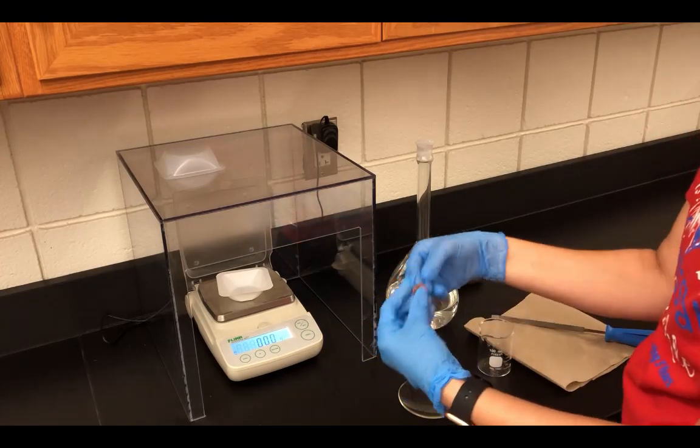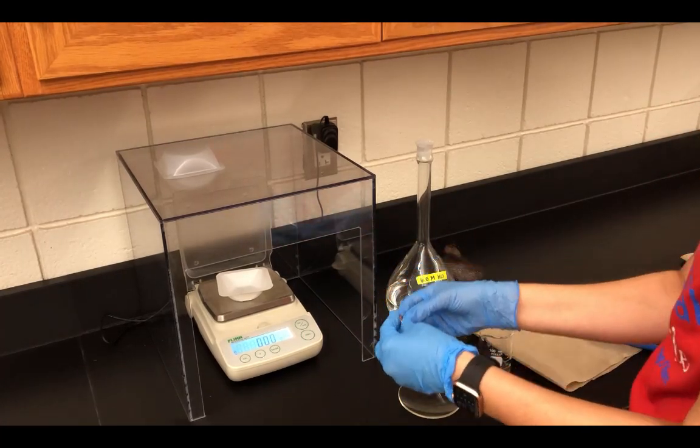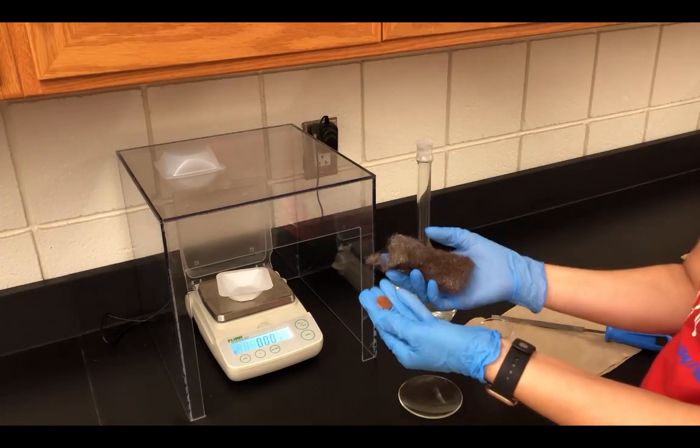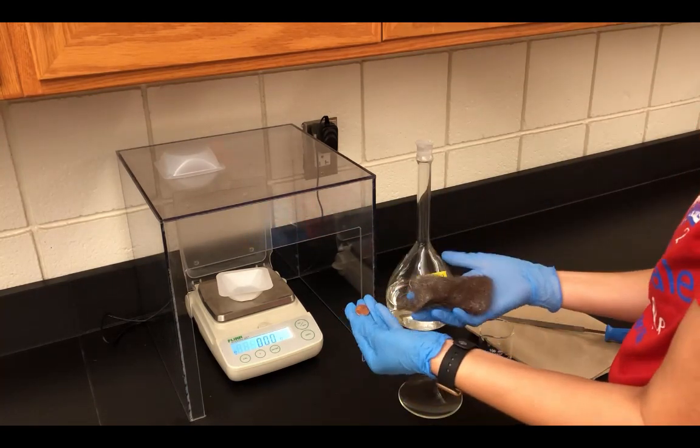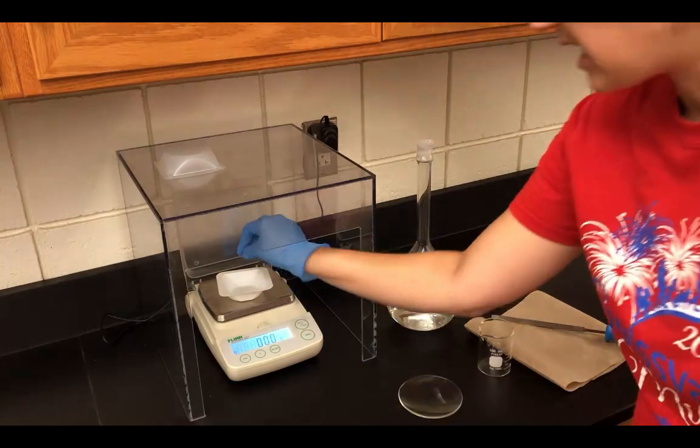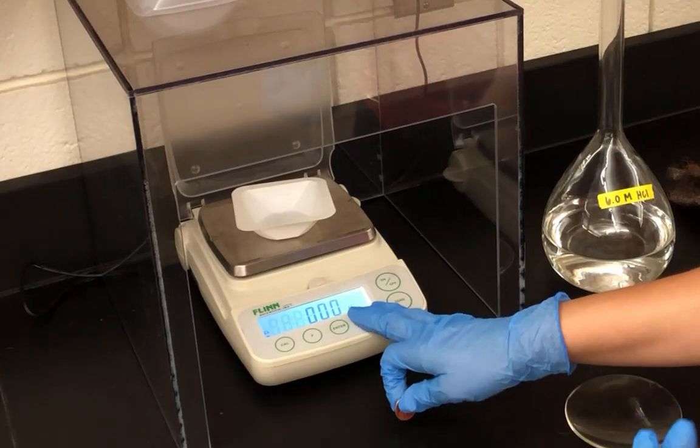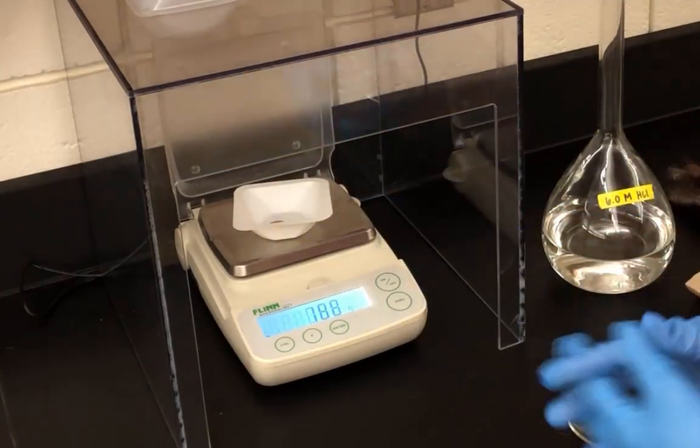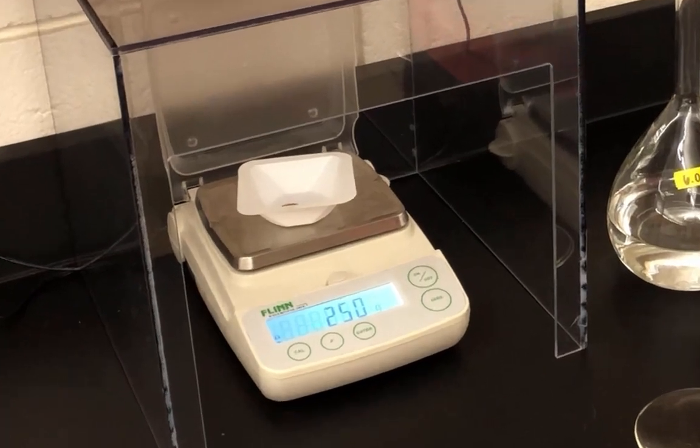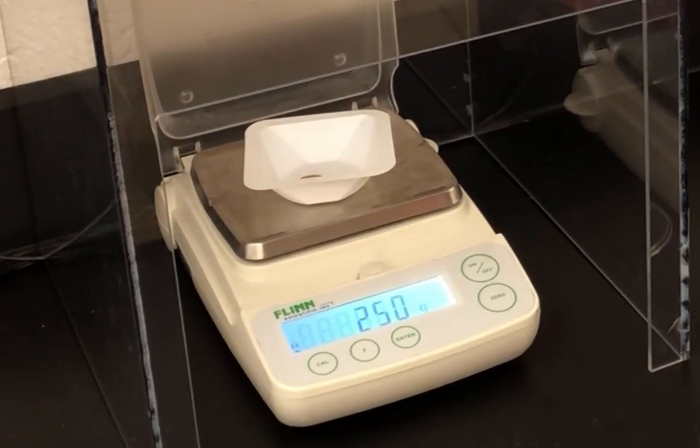It's already shiny, so we don't need to clean it with steel wool. Now we'll take the mass. It's already at zero, so I'll put the penny into the weigh boat and wait for it to steady. The mass of this post-1982 penny is 2.50 grams.